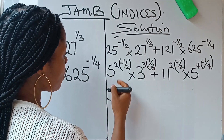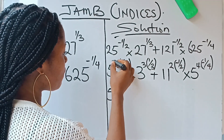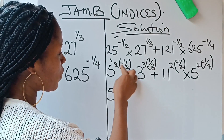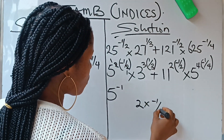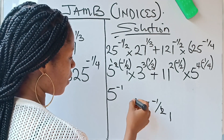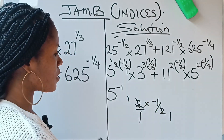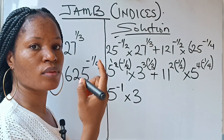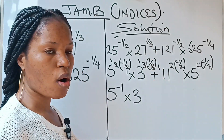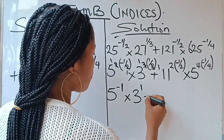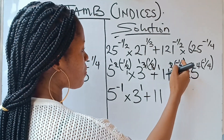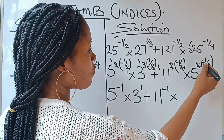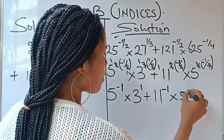So notice that you are going to have 5 raised to the power of 2 times minus 1 over 2. The 2s cancel, leaving 5 raised to the power of minus 1. Similarly for 3 raised to the power of 3 times 1 over 3 — the 3s cancel, leaving 3 raised to the power of 1. Then 11 raised to the power of 2 times minus 1 over 2 — the 2s cancel, giving 11 raised to the power of minus 1. And 5 raised to the power of 4 times minus 1 over 4 — the 4s cancel, giving 5 raised to the power of minus 1.